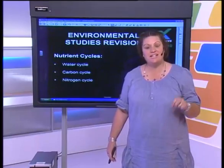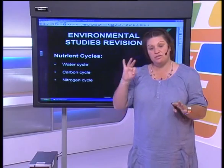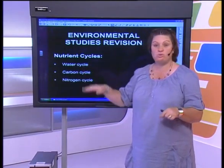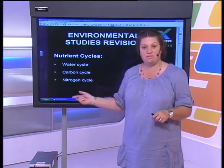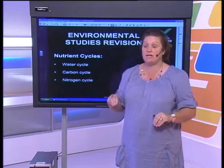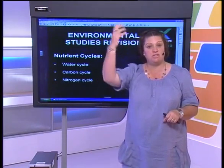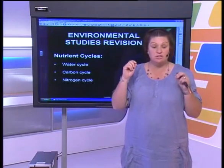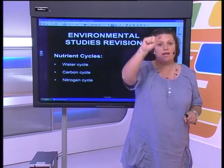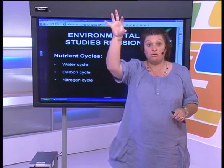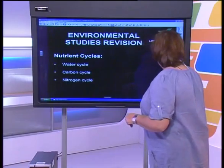The next section is cycles. You should have done three cycles: the water cycle, the carbon cycle, and the nitrogen cycle. Remember these are all abiotic factors — they cannot reproduce, so they must be circulated throughout the system, used and returned. When studying a cycle, start at a point, go through the system, and end at the same point — it must be used and then returned.